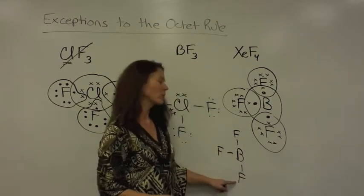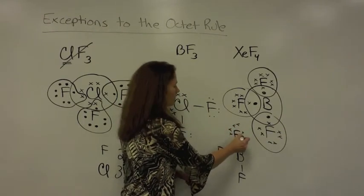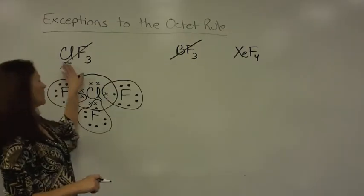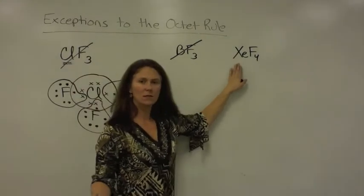Here's our structural formula, and then you can add in all the unshared electrons left over on each fluorine. We just did more than an octet, less than an octet, and now we have XeF4.